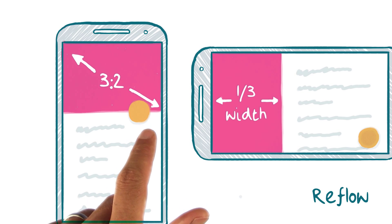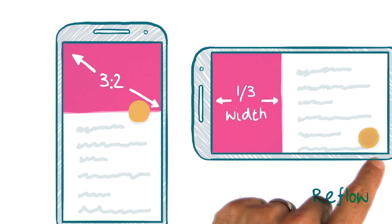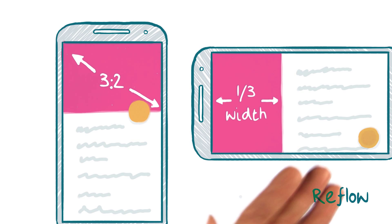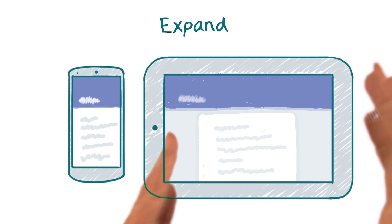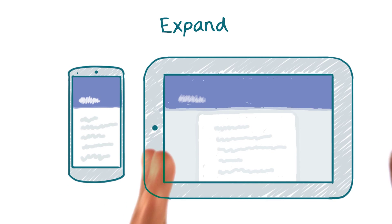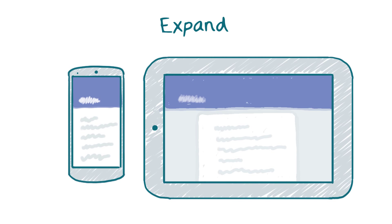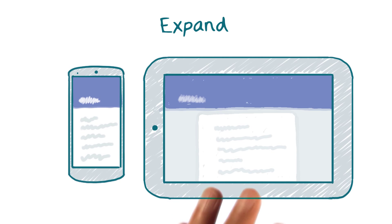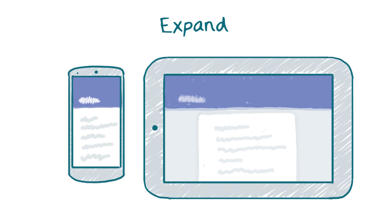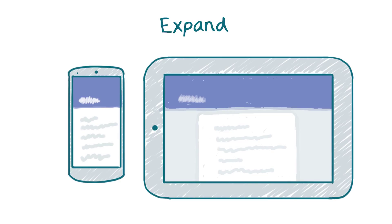Notice that we're also reflowing the FAB to a more appropriate position for this layout. If you don't have more content to show on screen, then you can expand the content up to a point, and then introduce margins to constrain it from growing too wide. This works extremely well with the paper metaphor, where you can use a paper surface which has a maximum width to constrain the content.